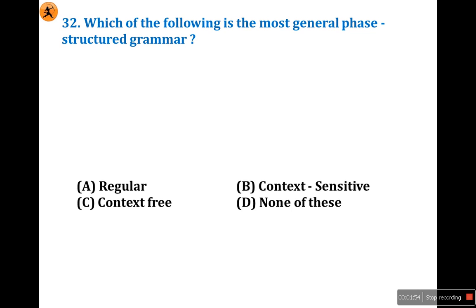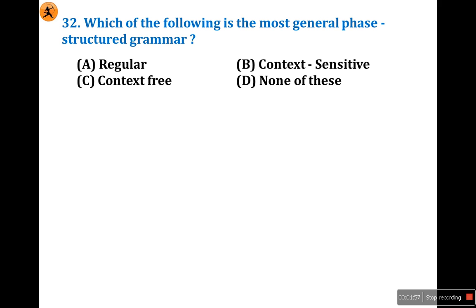Question 32: which of the following is the most general phrase-structured grammar? You already know the types of grammars: Type 0 is unstructured grammar, Type 1 is context-sensitive grammar, Type 2 is context-free grammar, and Type 3 is regular grammar. This question is asked frequently in previous papers — it's a very important question.